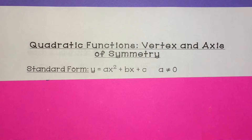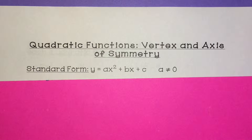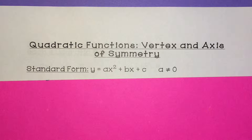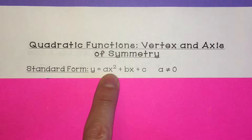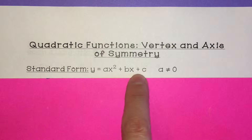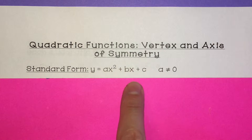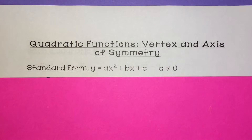The standard form of a quadratic function is y equals ax squared plus bx plus c. So a, b, and c are numbers. A is the number that's multiplied by x squared, b is multiplied by x, and c is a constant — the number that's by itself without a variable.